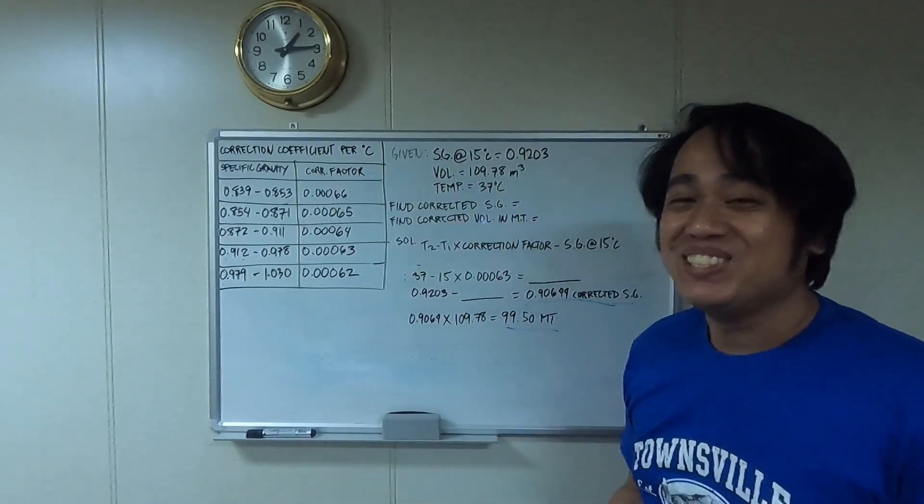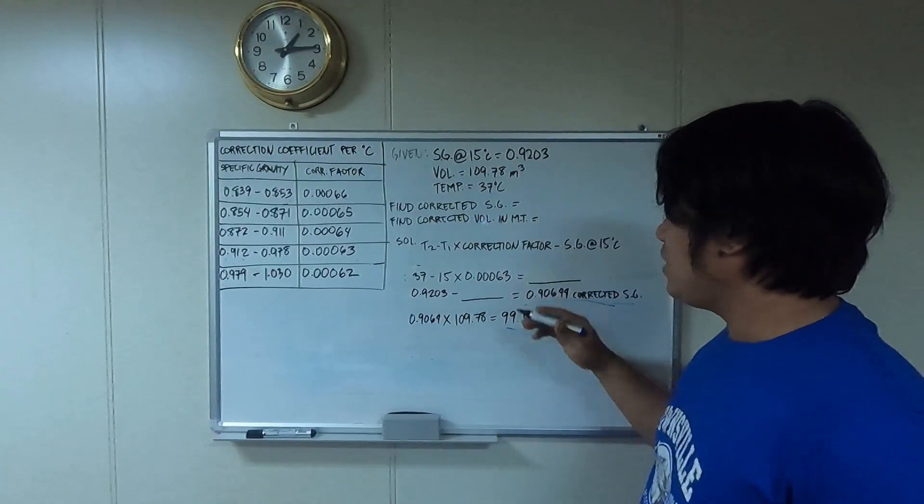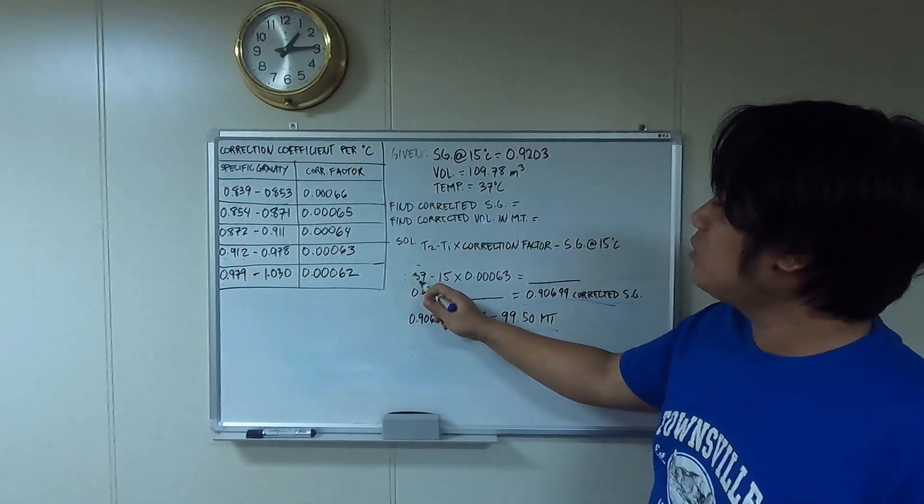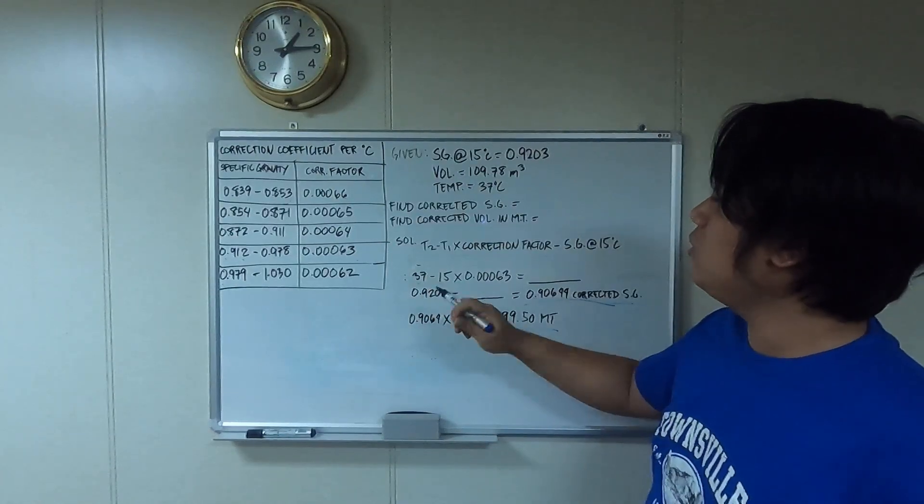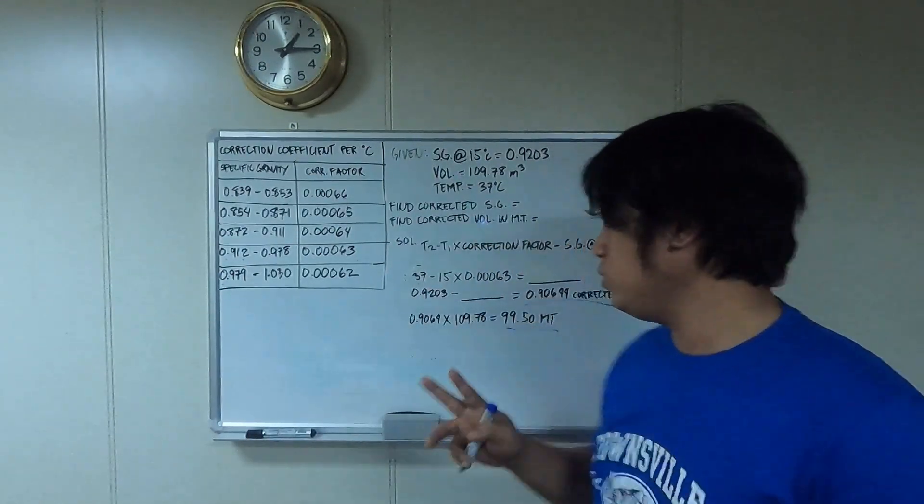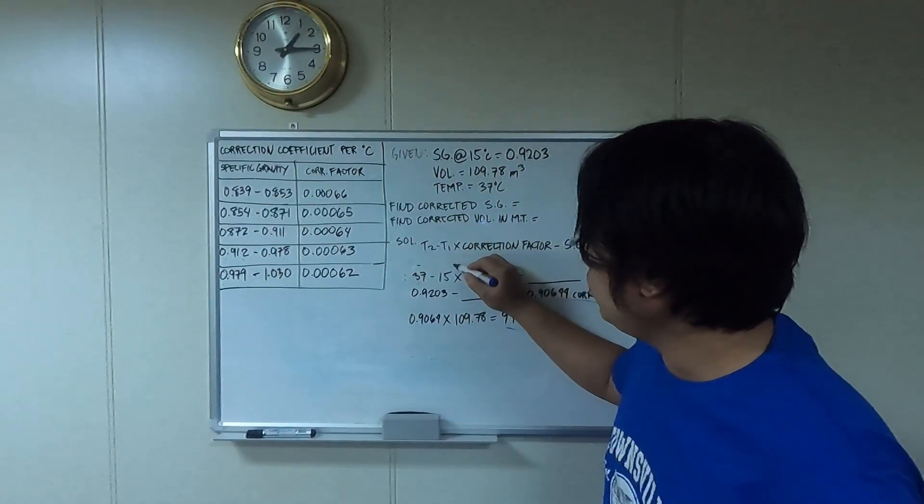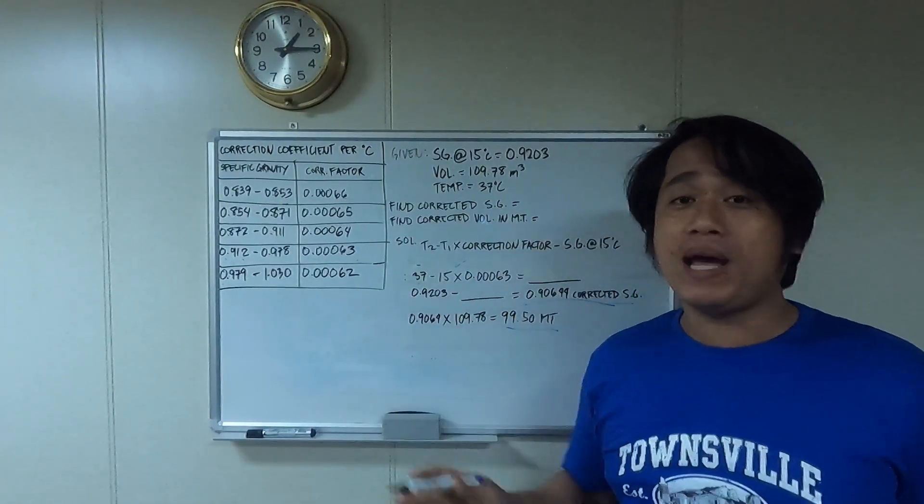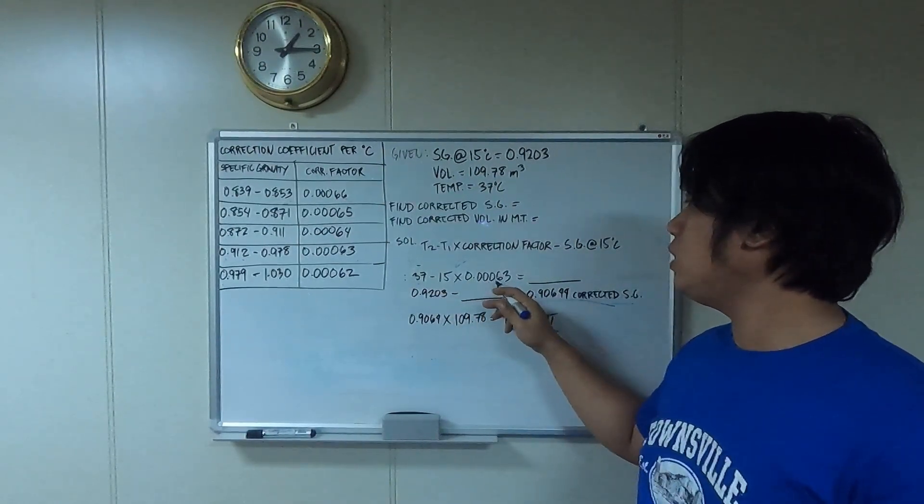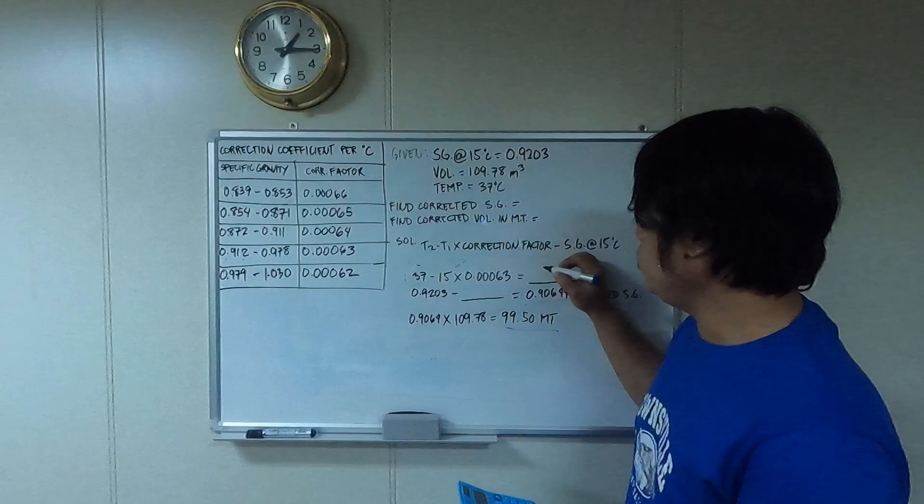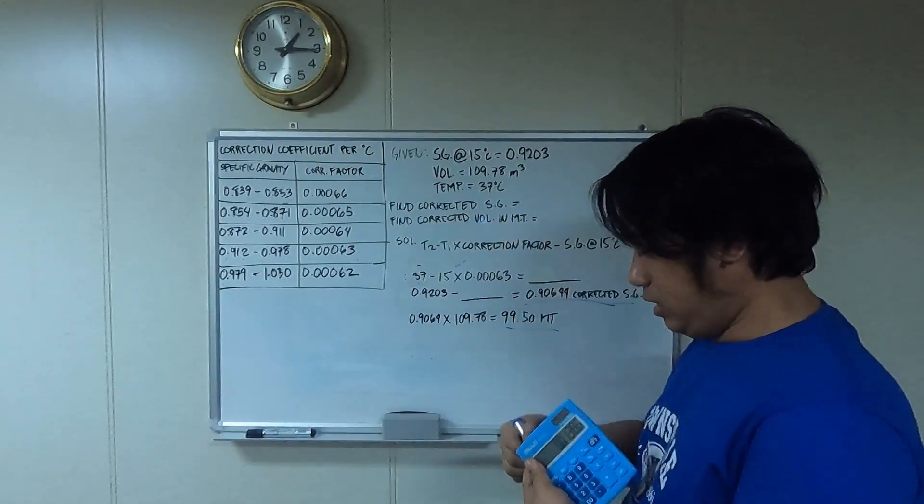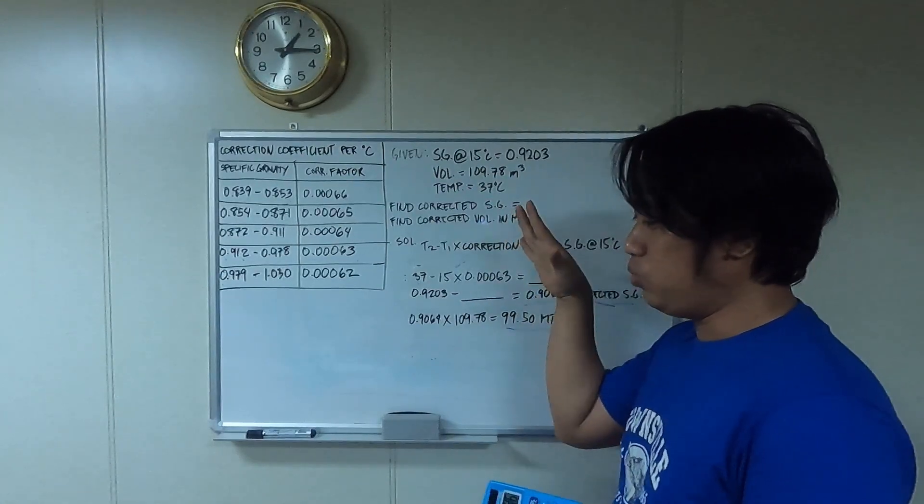Let's continue. We're going to minus this one: 37 minus 15 equals 22. Then I'm going to multiply it by 0.00063.